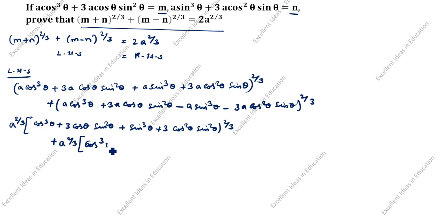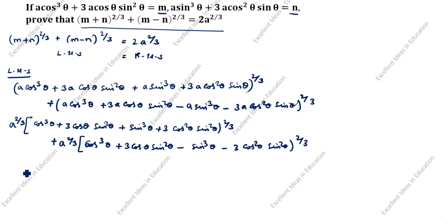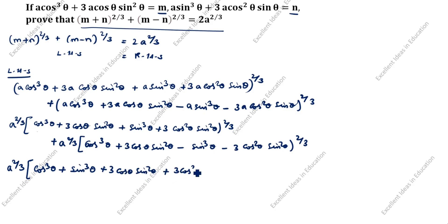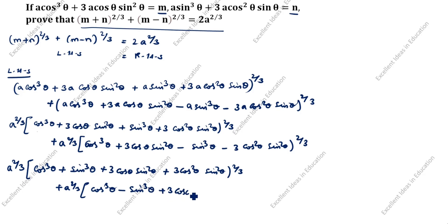Open the bracket. For (m+n): a^(2/3) [cos³θ + 3cosθ sin²θ + sin³θ + 3cos²θ sinθ]^(2/3). For (m−n): a^(2/3) [cos³θ + 3cosθ sin²θ − sin³θ − 3cos²θ sinθ]^(2/3).